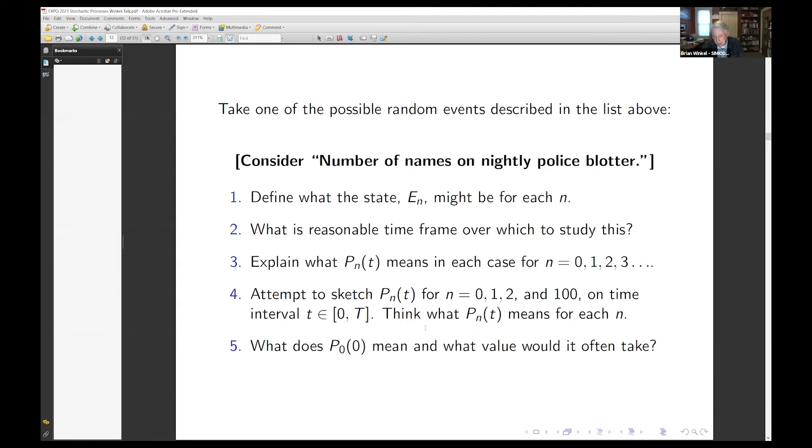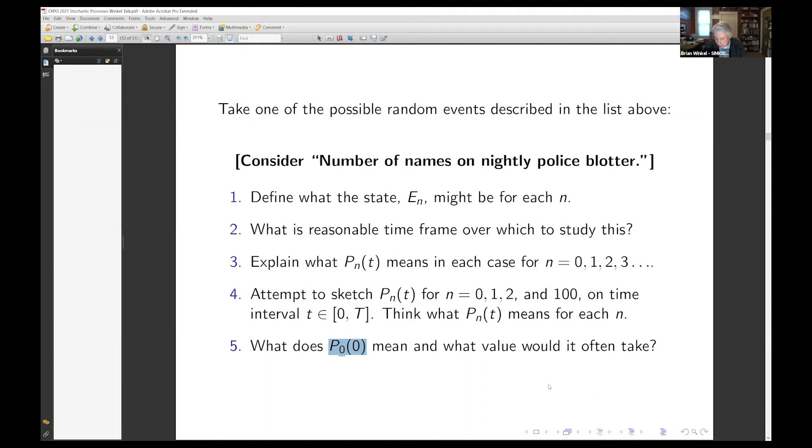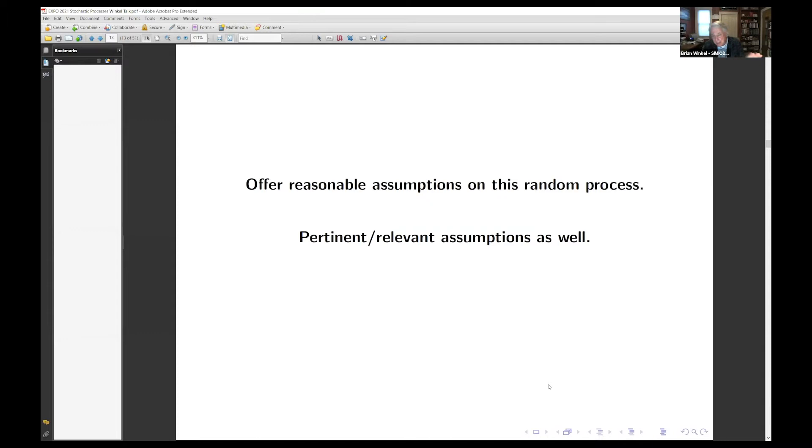We could try to sketch what P_n is. But one thing we could ask ourselves: what's the probability that at time zero, there are zero names on the list? Well, at midnight, we have clean slate, right? So the probability that at time zero, midnight, there are no names on the list is one. That's dead certain. We could talk about assumptions: is it raining? Is it not raining? Is the fraternities having parties, etc.